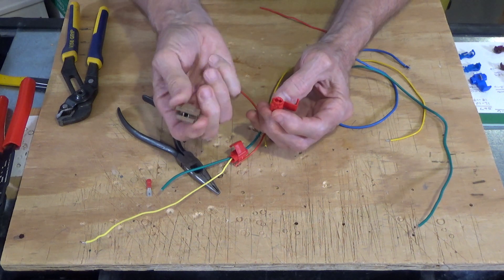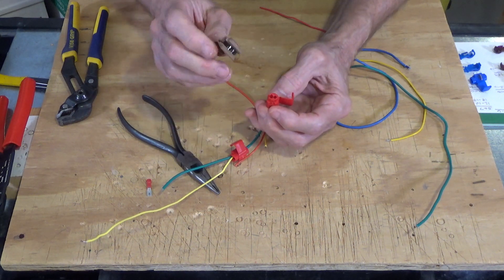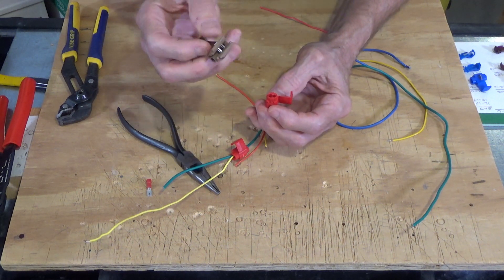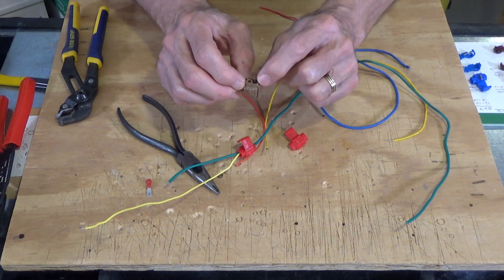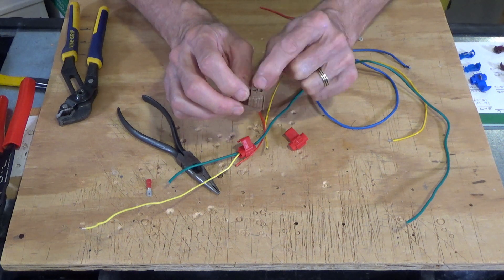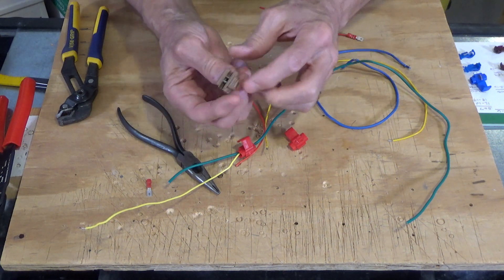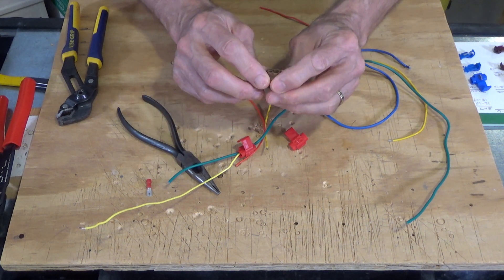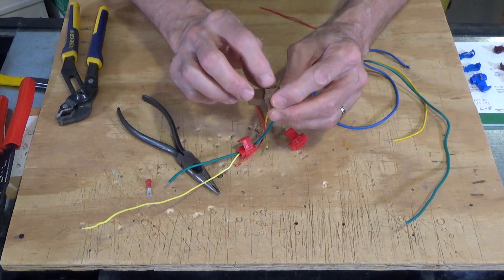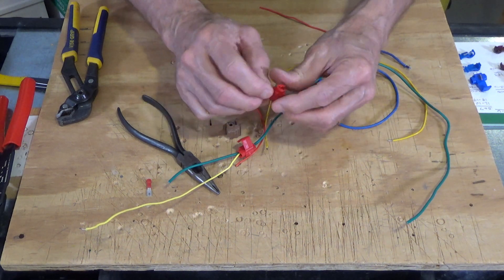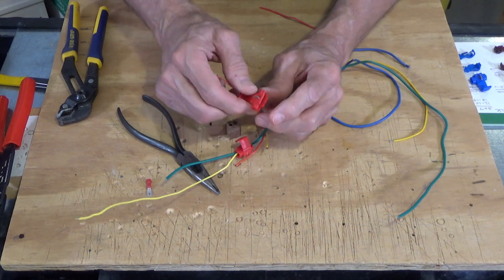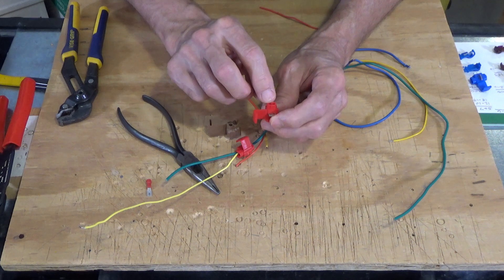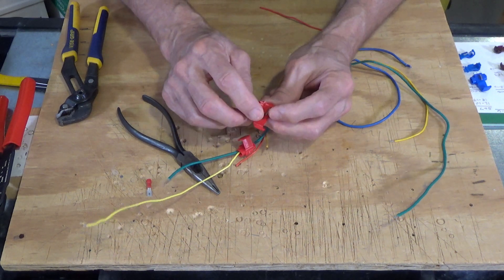This one here in my right hand is a number 3M 567 and it's rated for a 12 to 10 gauge wire for the main running wire, and it can take 14 to 18 gauge wires for the drop. This other one here, this number 905, it's rated for 14 to 18 gauge wires and 18 to 22 gauge wires for the drop.